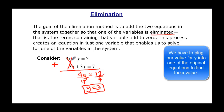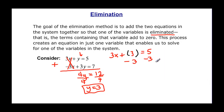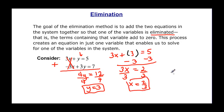Now we have two equations and we know y is equal to 3, so I just have to plug it back into one of them. The top equation is nice because the y has a coefficient of 1. So 3x plus y equals 5, and my y is 3. Subtract 3 from both sides, so 3x equals 5 minus 3, which is 2. Divide by 3, and x equals 2/3. So my ordered pair is (2/3, 3).